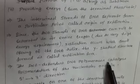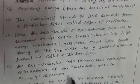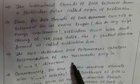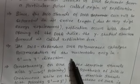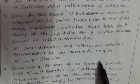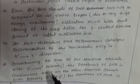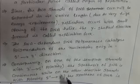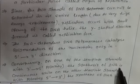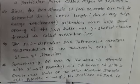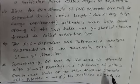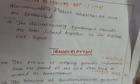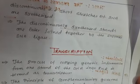The DNA-dependent DNA polymerase catalyzes the polymerization of nucleotides only in the 5' to 3' direction. Consequently, on one of the template strands with 3' to 5' polarity, the synthesis of DNA is continuous. While on the other template strand with 5' to 3' polarity, the synthesis of DNA is discontinuous, and short segments of DNA are synthesized.